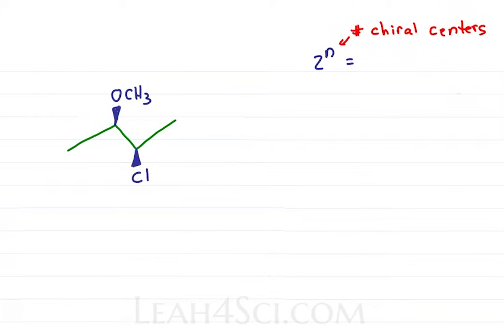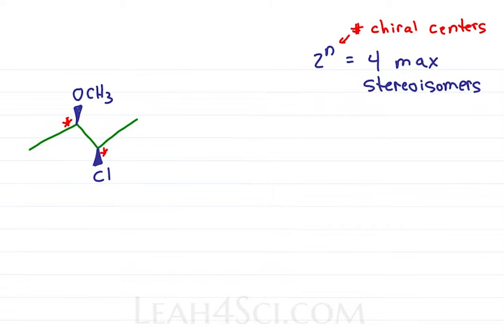If a molecule has more than one chiral center, we use 2 to the N to find the maximum number of potential stereoisomers. Where in this molecule, OCH3 and chlorine both sit on a chiral carbon and if N is equal to the number of chiral centers, we have a maximum of 4 potential stereoisomers. Let's find them all using a simple copy and flip method.